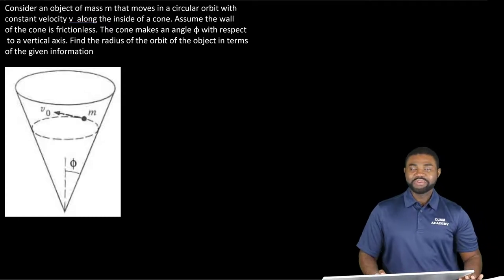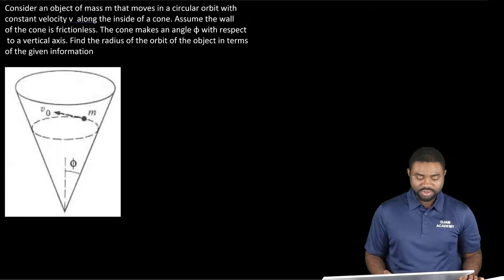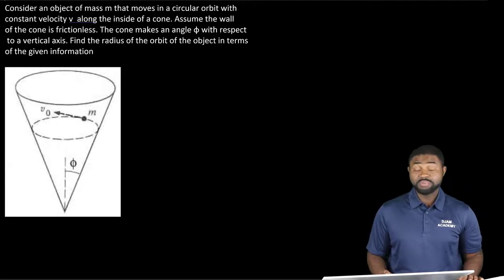Hi everyone and welcome to JAMAcademy. In this example we have an object, probably a car, of mass m that moves in a circular orbit with a constant velocity v along the inside of a cone.